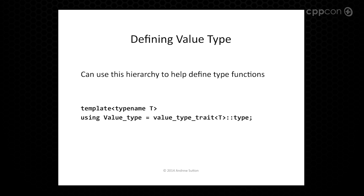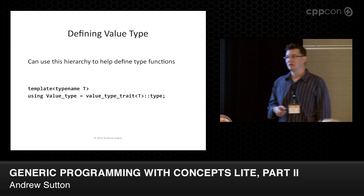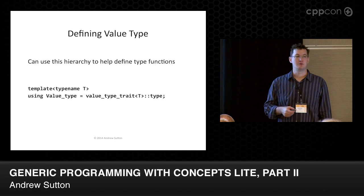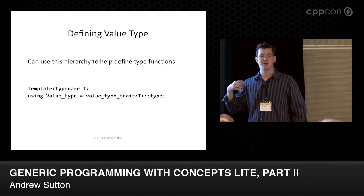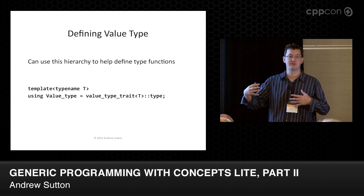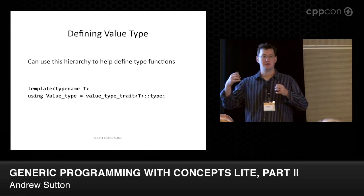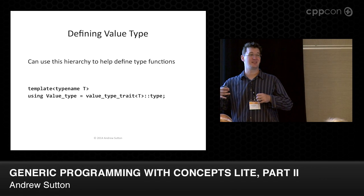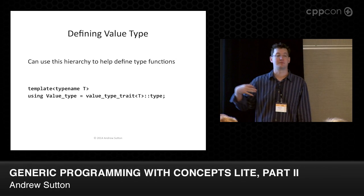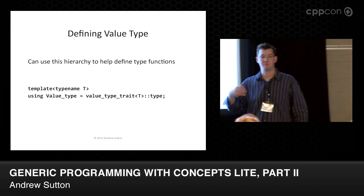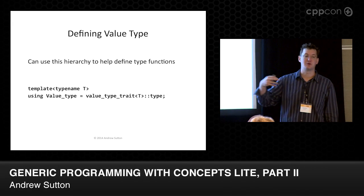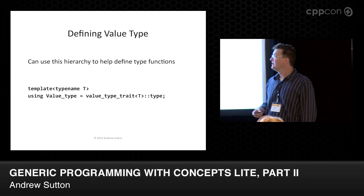If you have a series of overloads that each take seven arguments, you do specialization by type first. If you have any leftover candidates that are still equivalently specialized by type, then you start comparing constraints. So you always do by type first and then go to constraints.